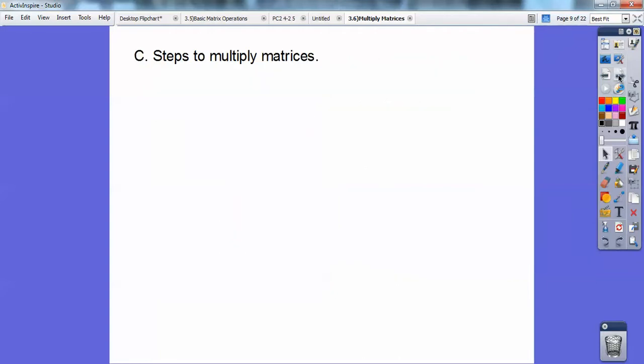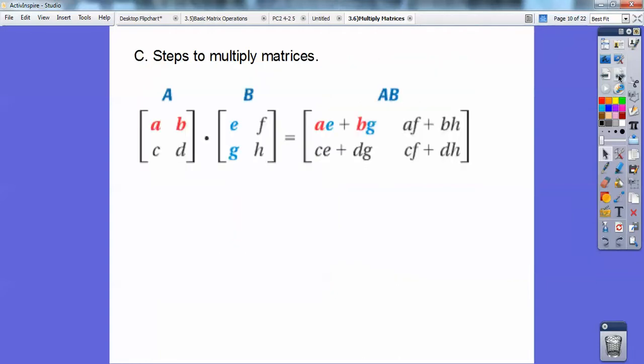All right, okay, so steps to multiply matrices. All right, so don't let this confuse you. Okay, can you see that the number of columns here, 1, 2, equals the number of rows here, 1, 2? I know they're both 2 by 2, so it's easy to see that. But if they do, then what you do is you multiply this number times this number, A times E,